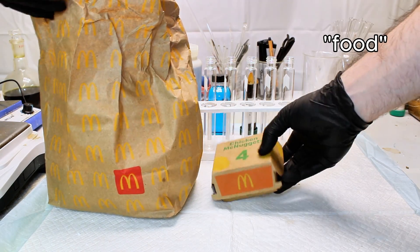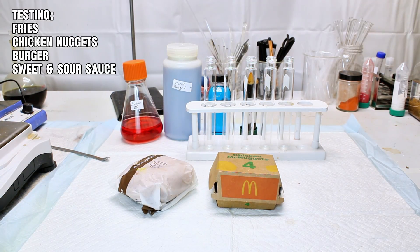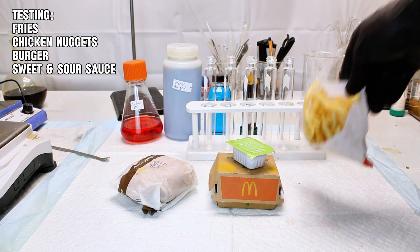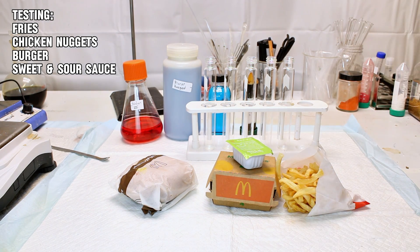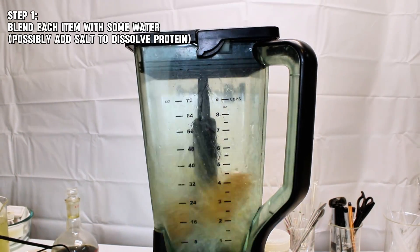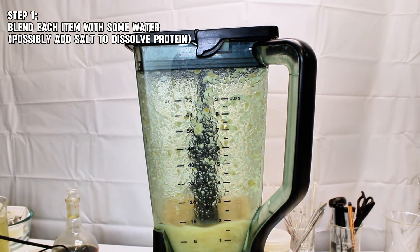And the food I decided to test consists of a few items I picked up at McDonald's. Here I've got some fries, some chicken nuggets, a basic hamburger, and some sweet and sour sauce I got with the nuggets. The first thing I want to do is blend each of these items separately in some water to try and get a somewhat homogenous slurry.